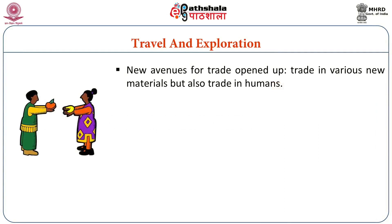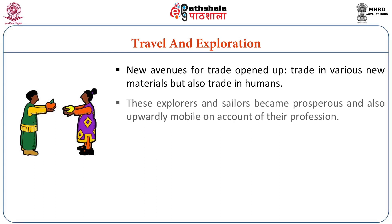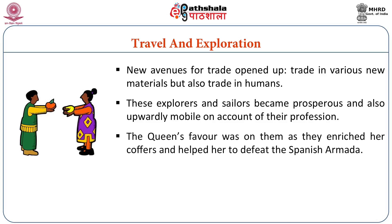This trade was in various kinds of things — precious jewels, gold, minerals, and mining activity — but also trade in human beings, as the slave trade begins during this period. The explorers and sailors who went on these long voyages became prosperous and upwardly mobile. Not just nobles went on these trips, but also people from the middle and lower middle classes. Because of the wealth they made, the queen was happy to favor them, giving them titles and government positions. When the Spanish Armada came, these sailors helped in defeating it.